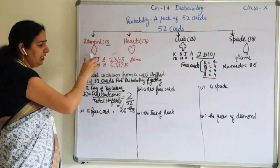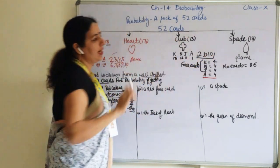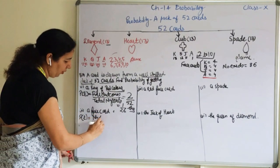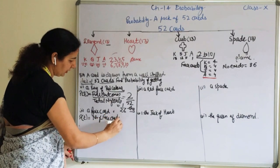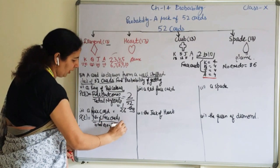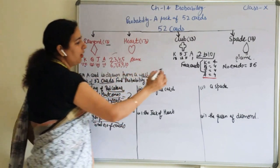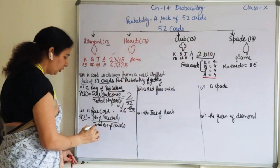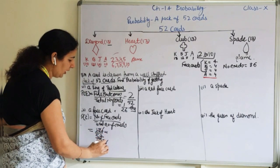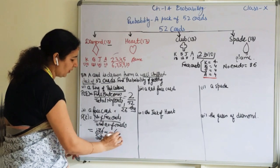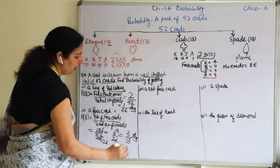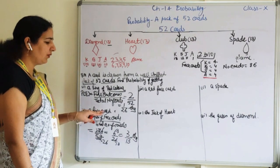Part two: find the probability of a face card. There are 3 face cards in each set — 3 in diamonds, 3 in hearts, 3 in clubs, 3 in spades. Total face cards are 12. Probability = 12/52, which reduces to 3/13.